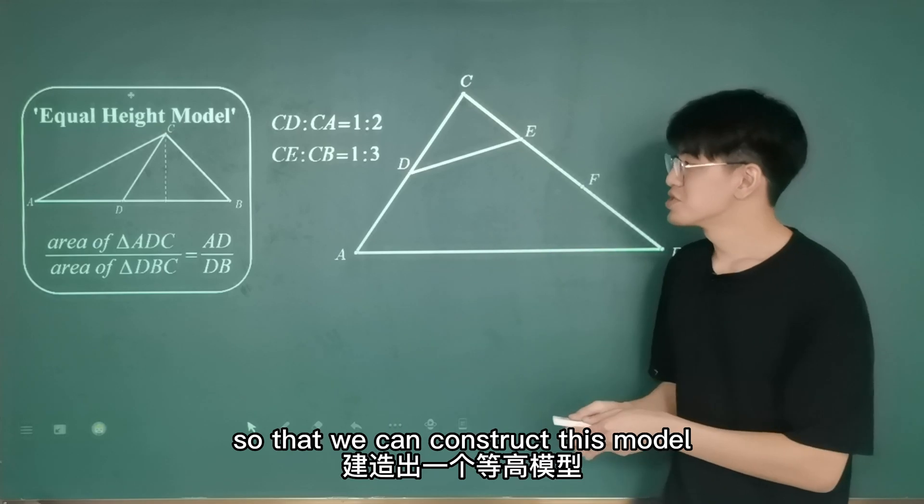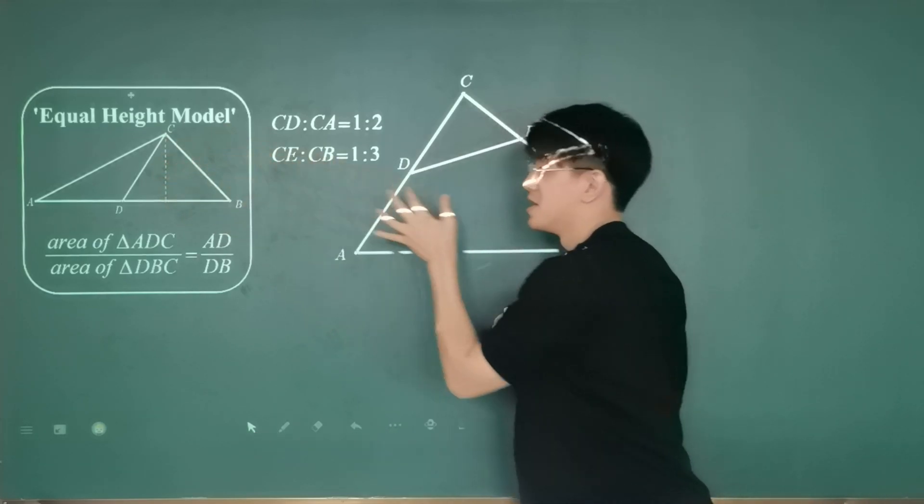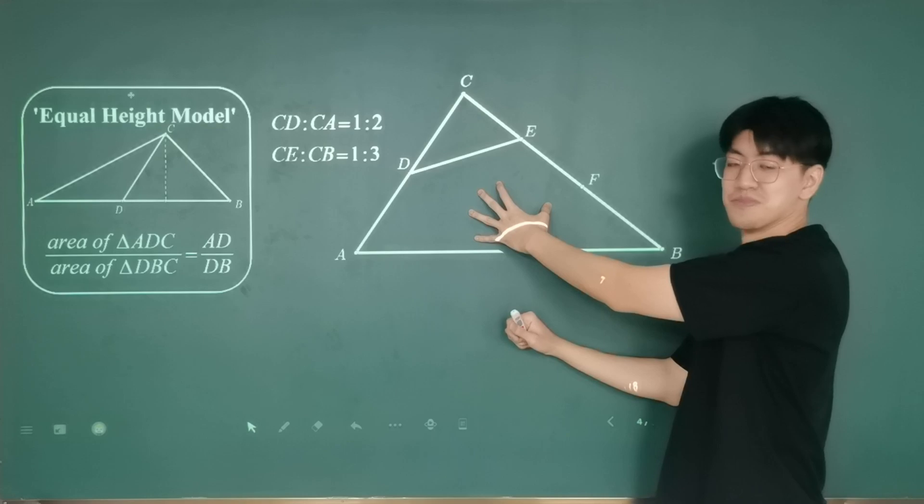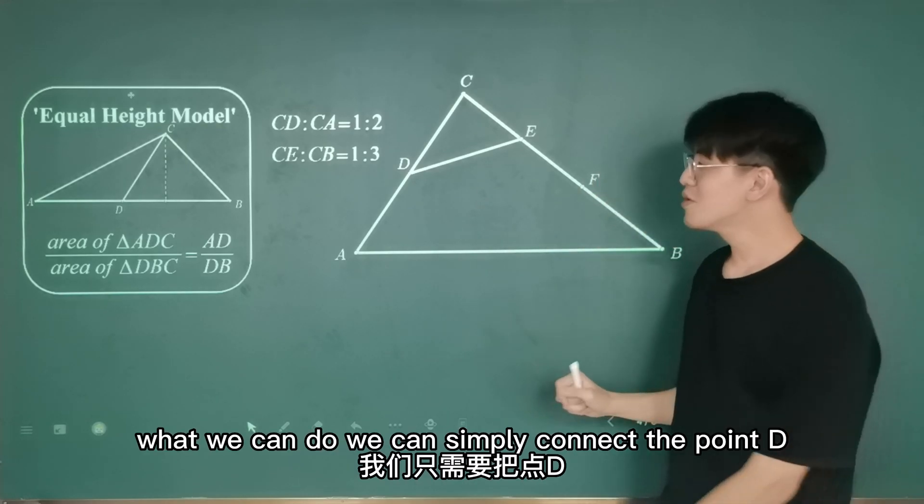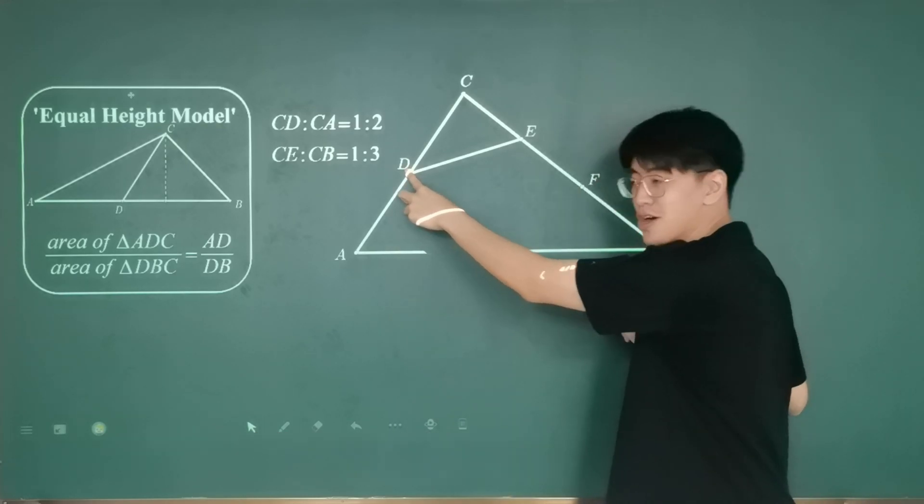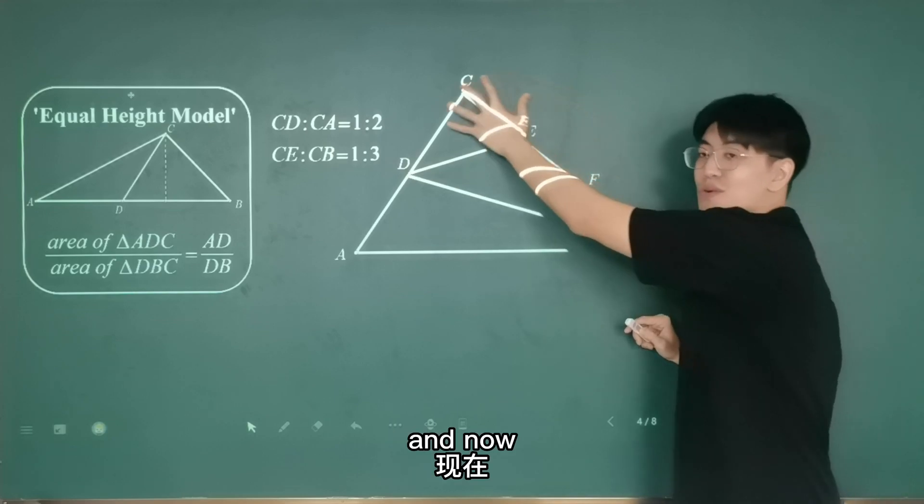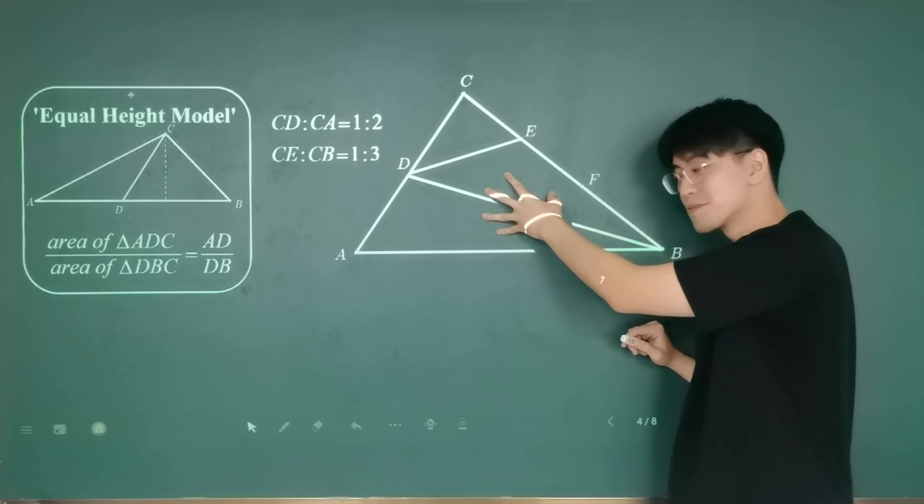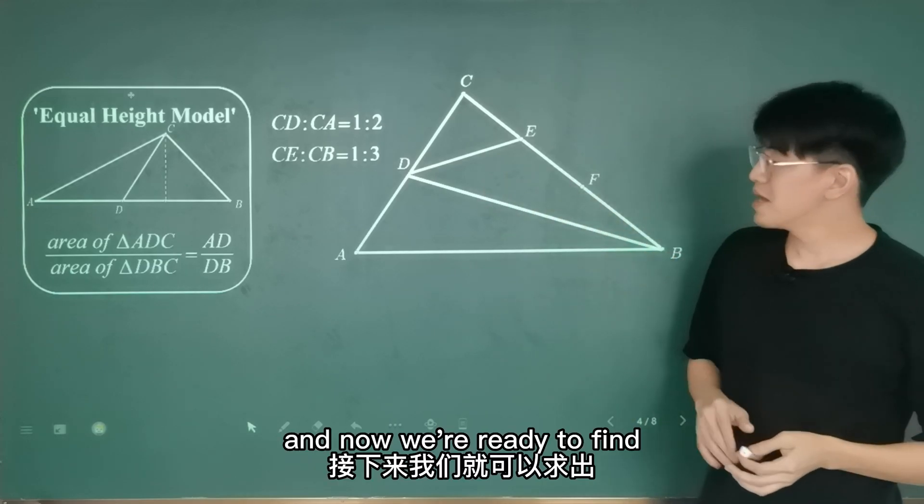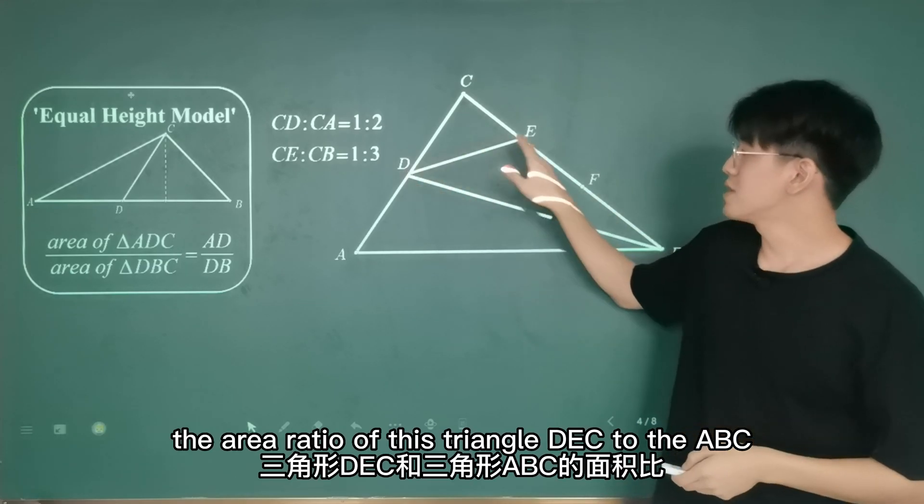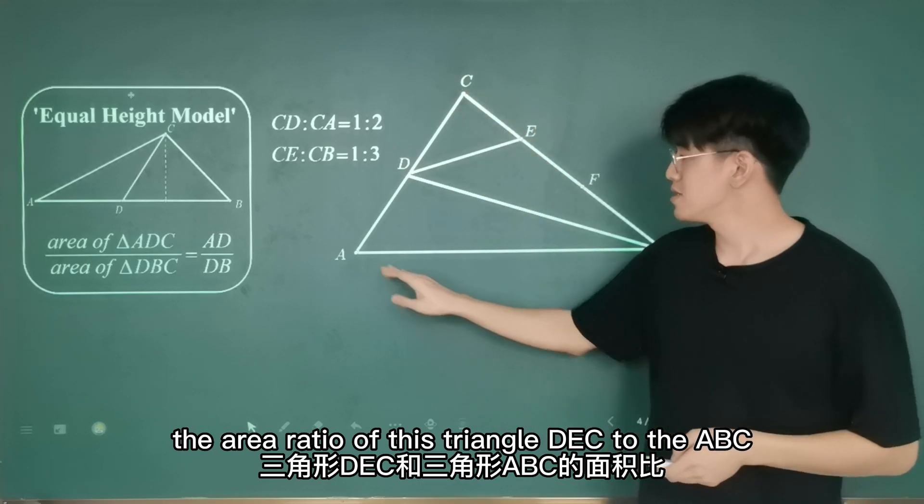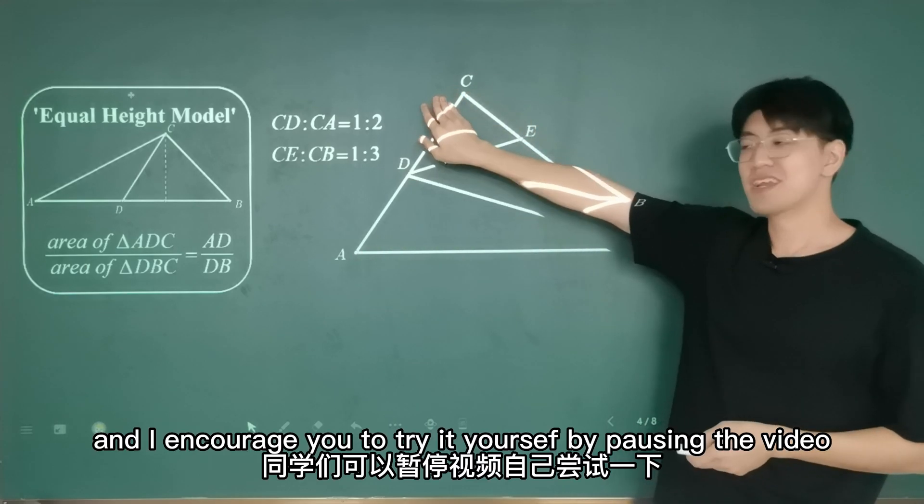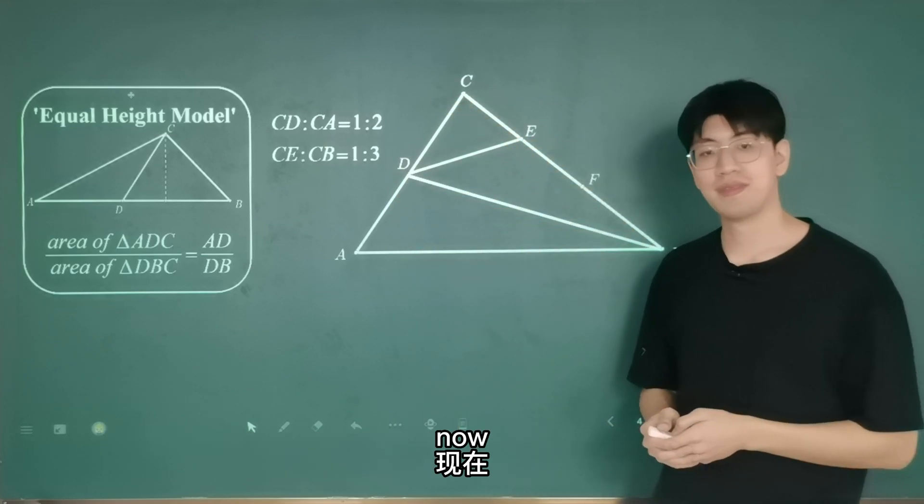However, can you figure out a way so that we can construct this model triangle in this shape? Brilliant! What we can do, we can simply connect the point D to the point B, and now we get triangles with the same height in this shape. And now we're ready to find the area ratio of triangle DEC to triangle ABC. I encourage you to try it yourself by pausing the video now.